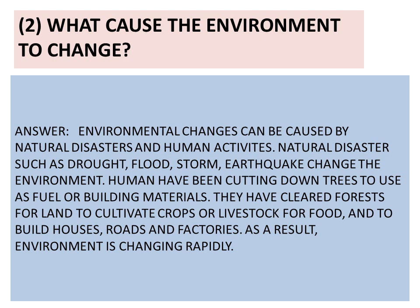Number 2: What caused the environment to change? Answer: Environmental changes can be caused by natural disasters and human activities. Natural disasters such as drought, flood, storm, and earthquake change the environment. Humans have been cutting down trees to use as fuel or building materials. They have cleared forests for land to cultivate crops or livestock, and to build houses, roads, and factories. As a result, the environment is changing rapidly.